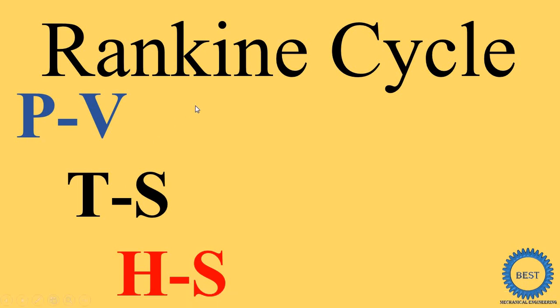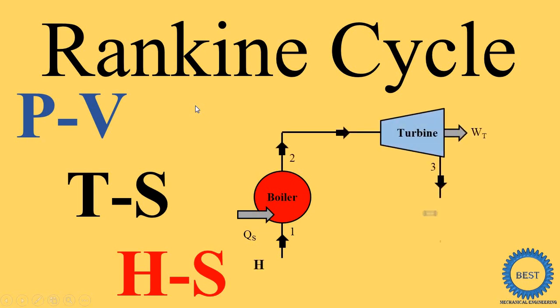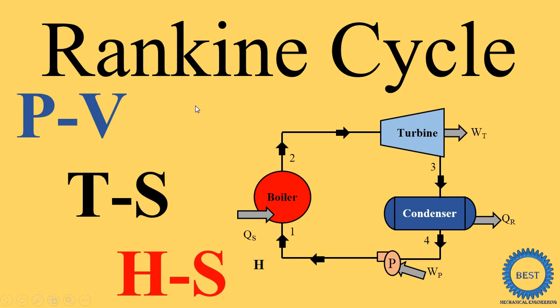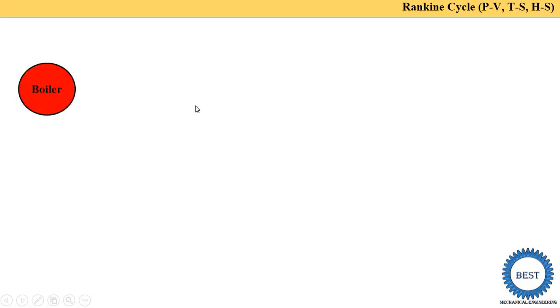In this video, I explain how to draw PV, TS, and HS diagrams of the Rankine cycle using animation, so you will understand it easily. In a Rankine cycle, there are four components: the boiler, turbine, condenser, and pump.